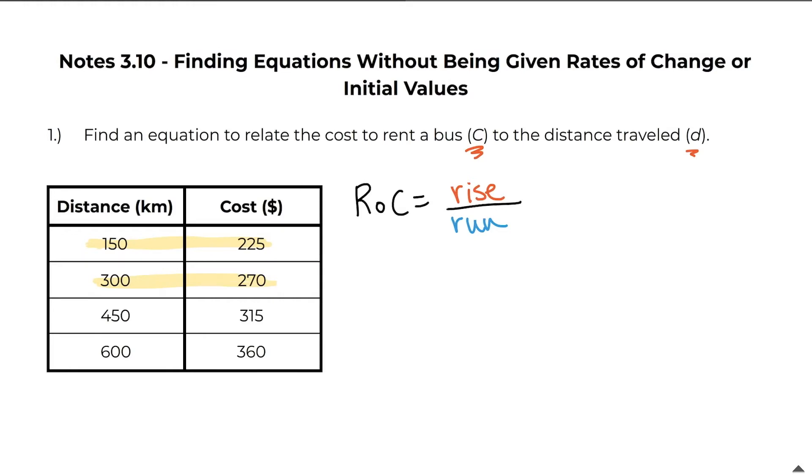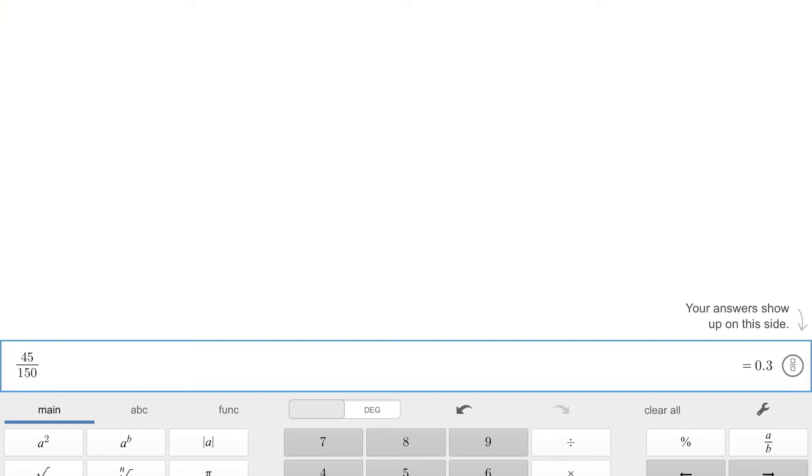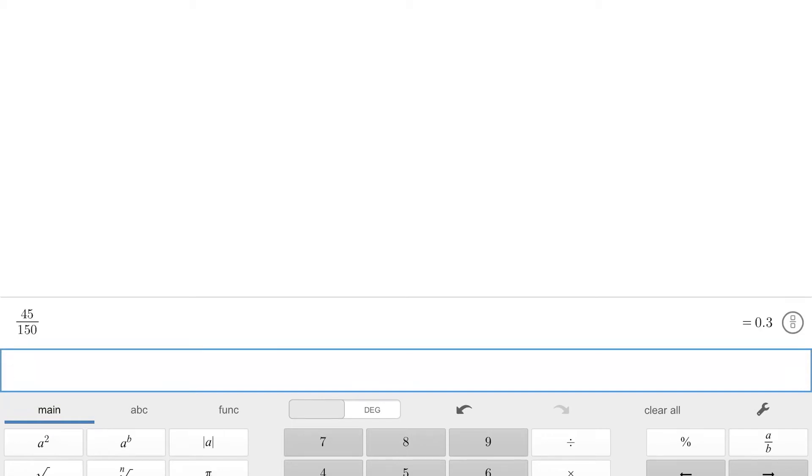To find the rise I would just do 270 minus 225. So when I do that subtraction I would end up getting 45. So this is 45 dollars. And then for my run it went from 150 to 300. So I would subtract those two numbers and I would get 150 kilometers. Let's go ahead and divide these two values and see what we get for our rate of change.